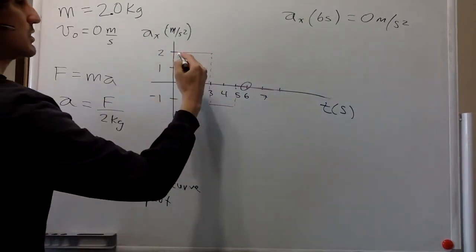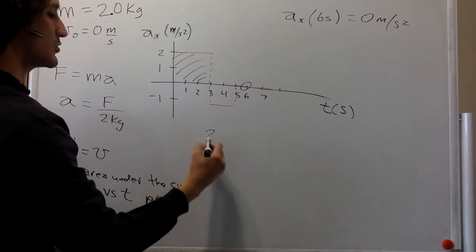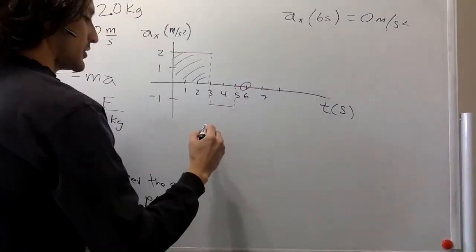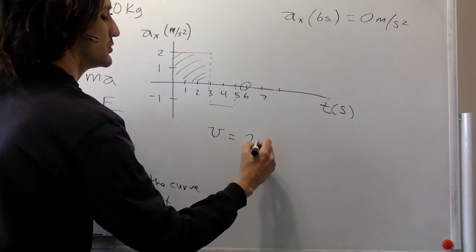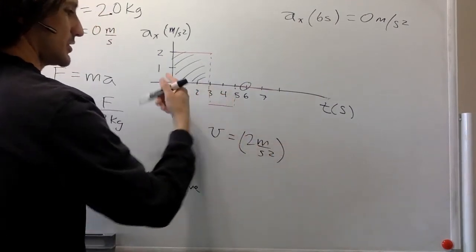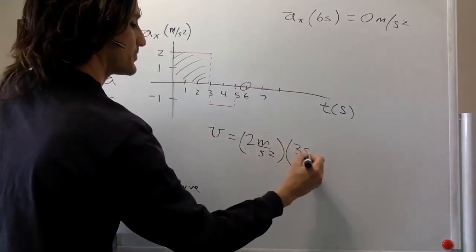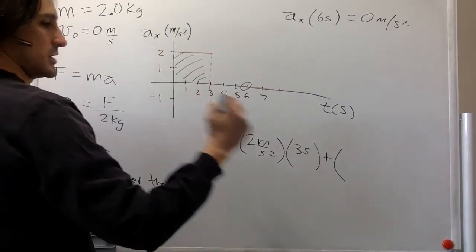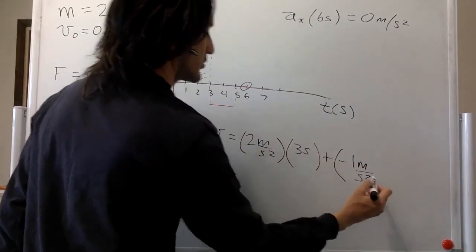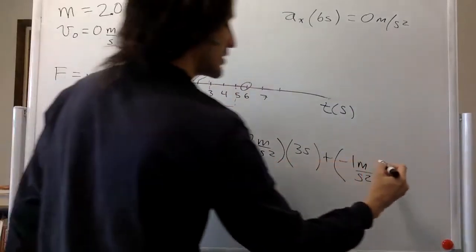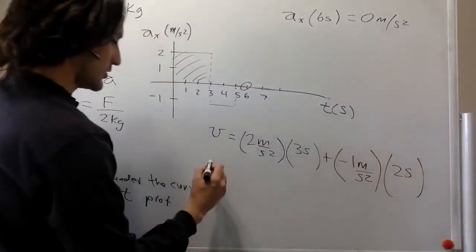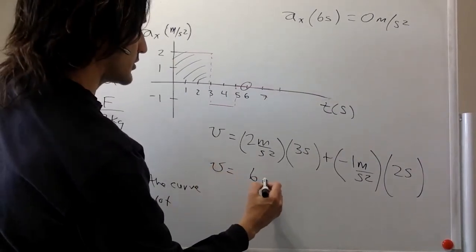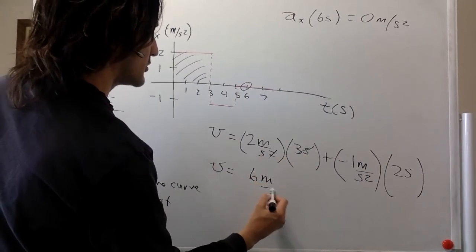So we just have to look at the area over here. Velocity is equal to 2 meters per second squared times 3 seconds plus negative 1 meter per second squared times 2 seconds. And so the velocity is 6, the seconds go away, 6 meters per second.